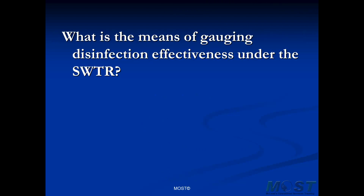What is the means of gauging disinfection effectiveness under the surface water treatment rule? The surface water treatment rule has given us a second means of determining if our water is safe to drink from a pathogen standpoint, and that means is the CT calculation.